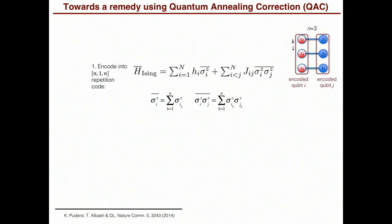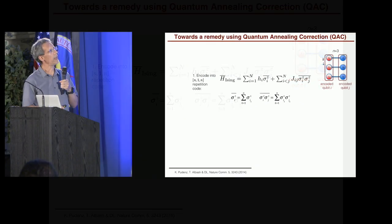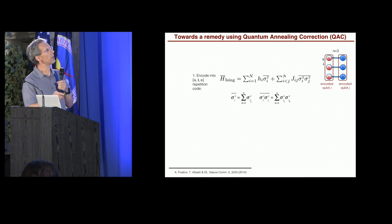The idea of quantum annealing correction, it's a poor man's version of trying to implement quantum error correction because we can only partly implement an error correcting code. So the code we're implementing is the classical repetition code. So essentially what we're doing is we encode every qubit into, let's say, three. So here is the encoded Ising Hamiltonian with the logical operators defined as such.